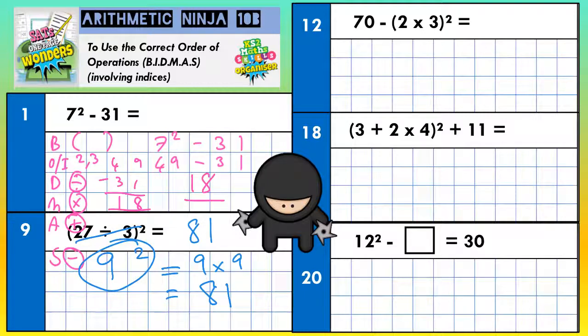Question 12, we've got a bracket, so we've got to do the bracket first. Cross out the bracket and put your answer underneath. 2 times 3 is 6. Drop everything that you've not done down. Drop down the 70, drop down the takeaway, drop down the squared. Now we've got a new sum with a takeaway, a 6 and a 6 squared.